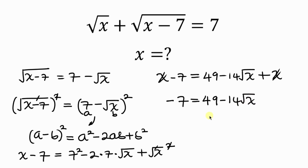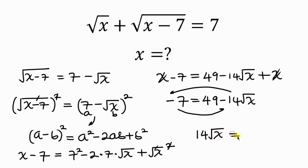Now we're going to take like terms — moving negative 14 root x to the left and negative 7 to the right. As negative 14 root x crosses to the left, it becomes positive 14 root x. On the right we already have 49, and as negative 7 crosses to the right it becomes plus 7. So this simplifies to 14 root x equals 49 plus 7, which is 56.